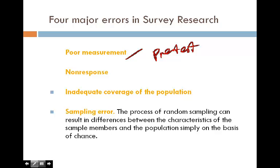Inadequate coverage of population is another issue we need to avoid. We need to make sure that we can cover our population comprehensively and hit our target population. Sampling error is another issue — random sampling can result in differences between the characteristics of the sample members and the population simply on the basis of chance. These are the four major errors in doing survey research.